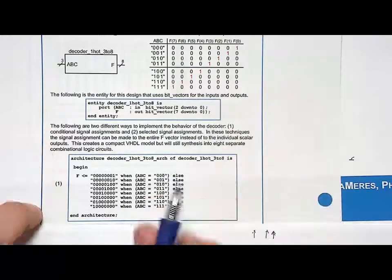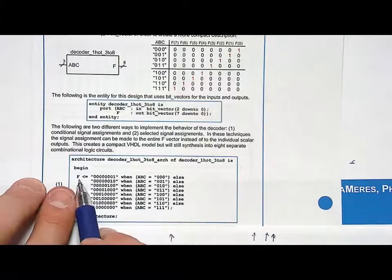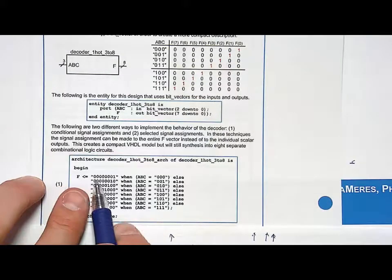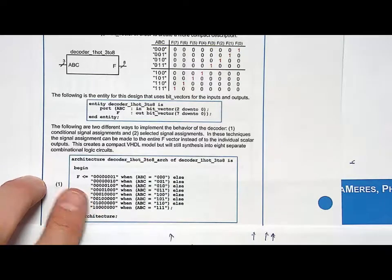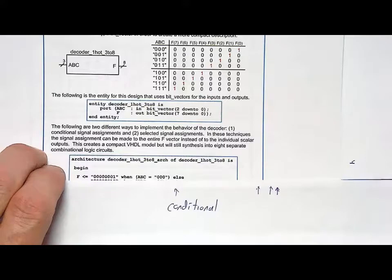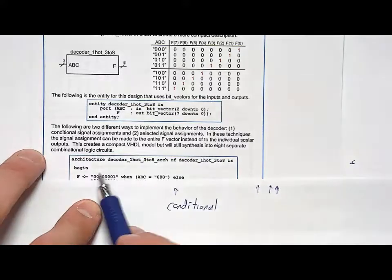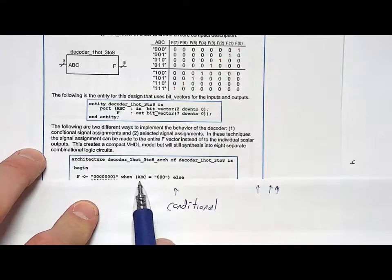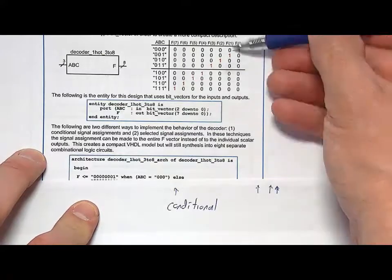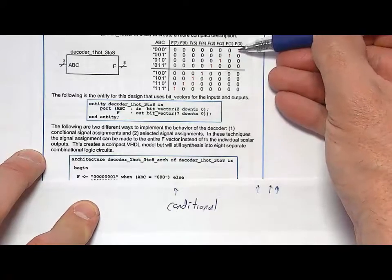So look at what we can do here. We can assign to F, the output vector, a particular code when the input is a particular value. So if you look at, let's just focus in right here on just that first one. I said F gets 0, 0, 0, 0, 0, 0, 0, 1 when the input is 0, 0, 0. So that's exactly what the functionality is directly out of the truth table.